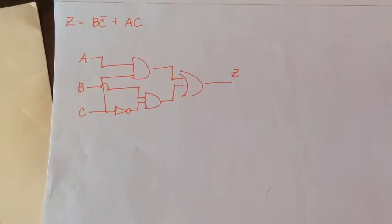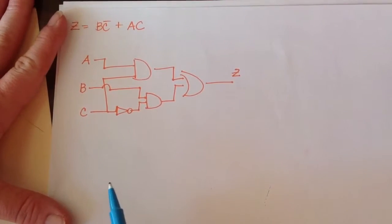Alright, so I wanted to do one last example for you on changing an AOI circuit to a NOR only circuit. And so we have the expression there, it's B and NOT C or A and C.